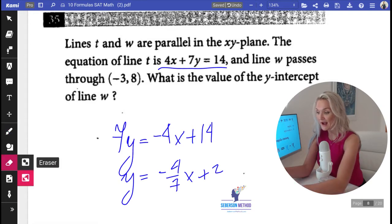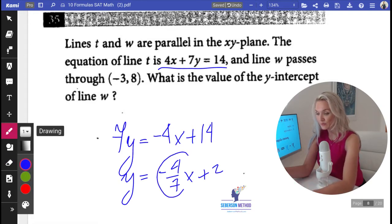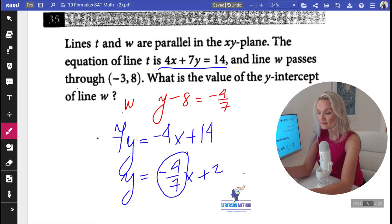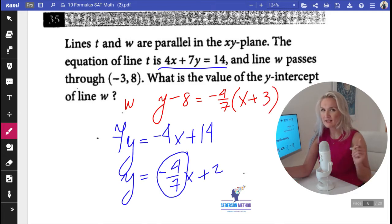Now I'm going to grab this slope, negative 4 over 7, and I'm going to plug it into the new equation, the equation of line W. That equation is going to begin with Y minus 8 is equal to negative 4 over 7 times X plus 3. Why did I just do that? I did this because I wanted to show you how to use a point slope formula.